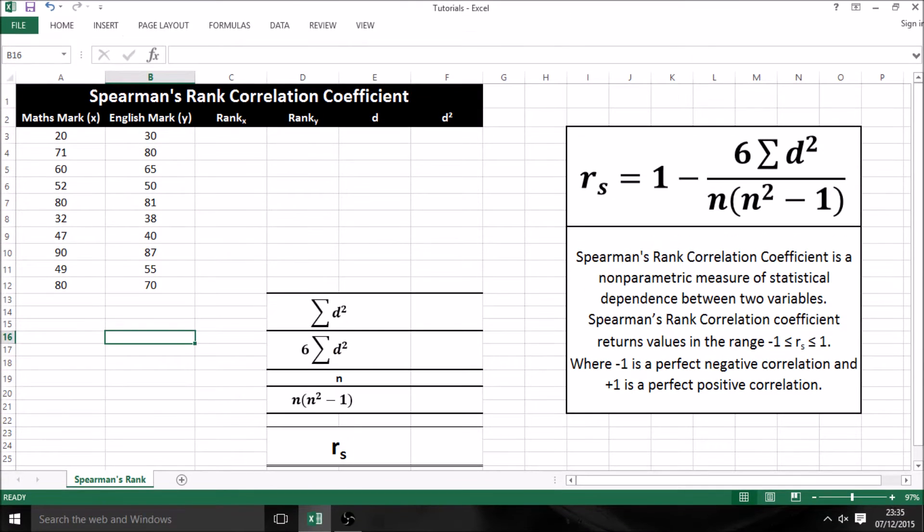Hello everyone, welcome to my Spearman's rank correlation coefficient tutorial. As you can see, the formula for Spearman's rank is on the right hand side of the page with a brief description underneath, which states that Spearman's rank is a statistical test between two variables which returns a value in the range minus 1 to 1, where negative 1 is perfect negative correlation and positive 1 is perfect positive correlation.